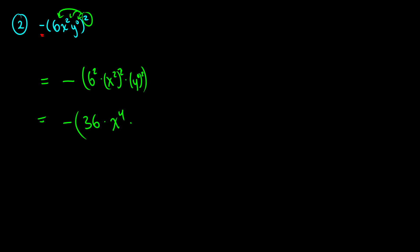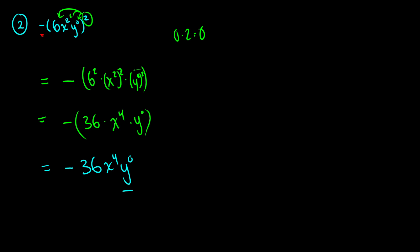What is y to the zero? Anything to the zero, as long as it's not zero itself, equals 1. We'll assume y is non-zero. Since we have a power to a power, we multiply: 0 times 2 gives y to the zero. That y to the zero is just 1, so the simplified answer is negative 36x to the fourth.